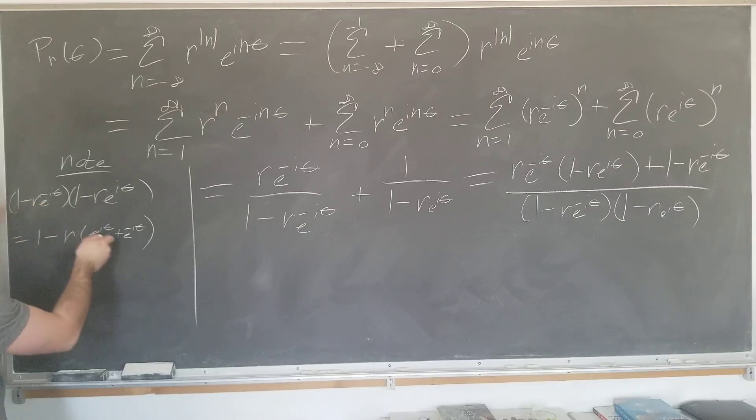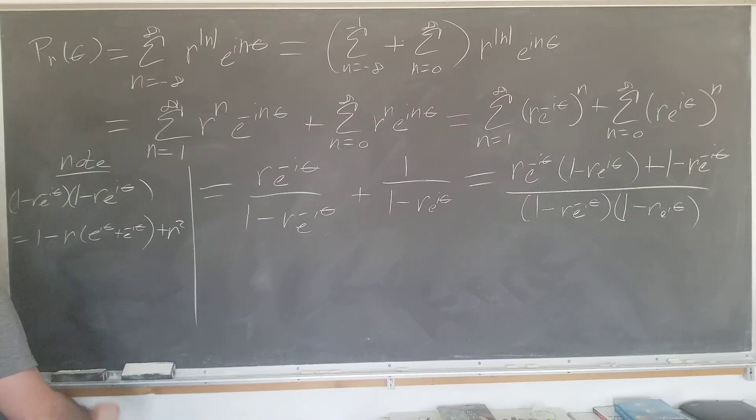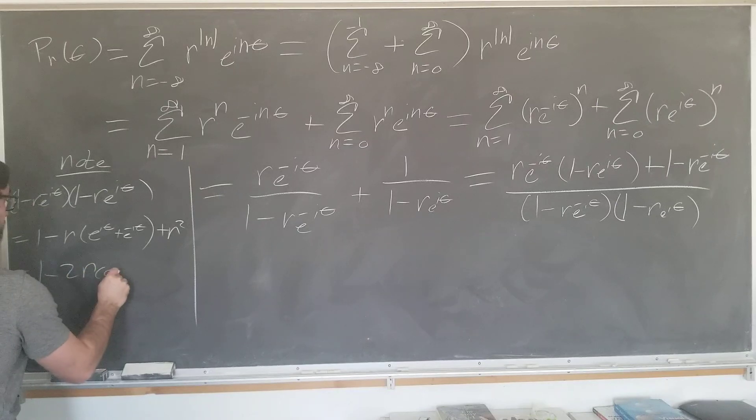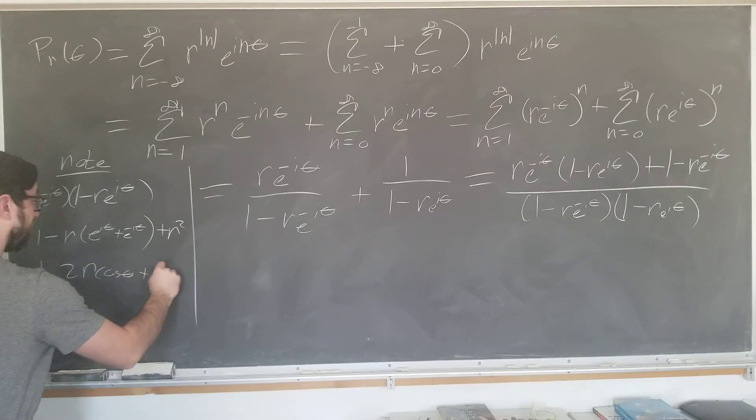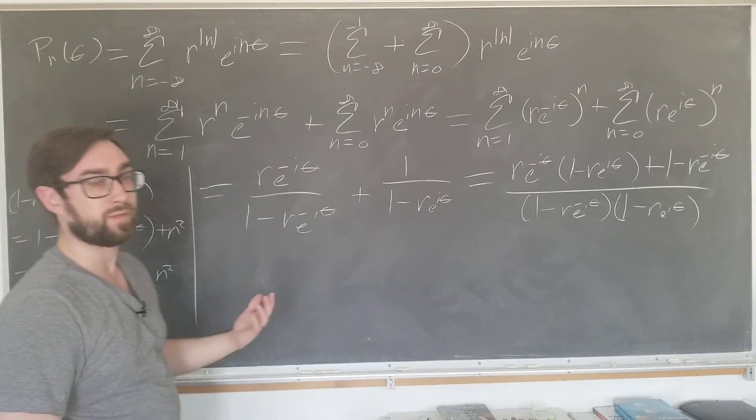Well, the minus signs go away. R squared and these exponentials cancel. We can recognize this as 2 times the cosine function. This should start to look familiar for anyone that's taking E and M.